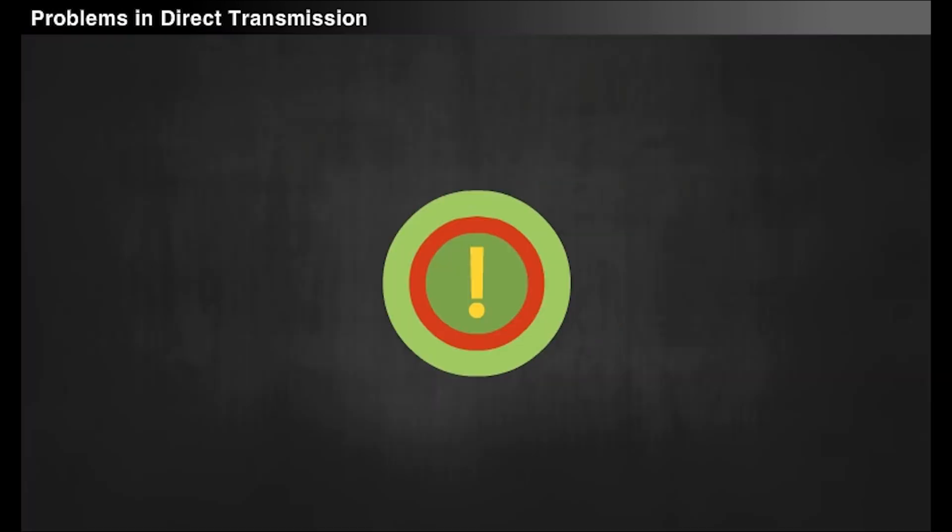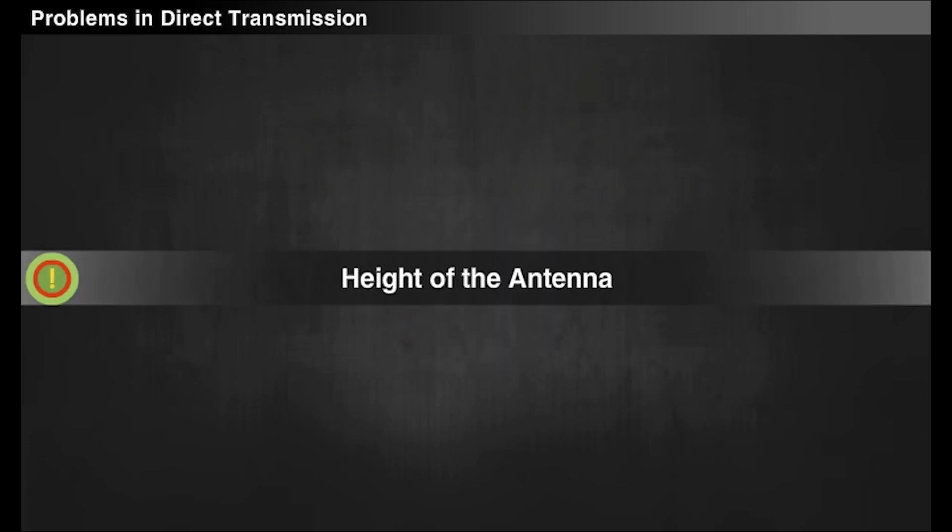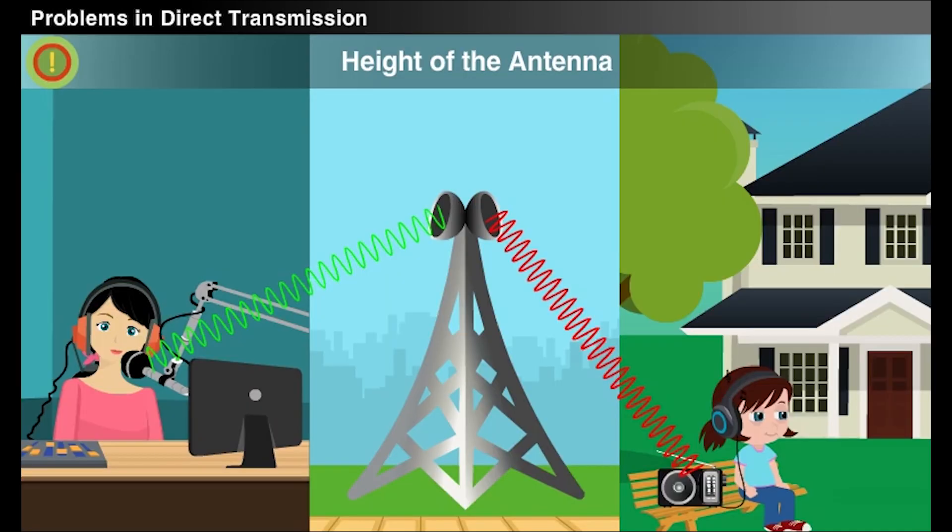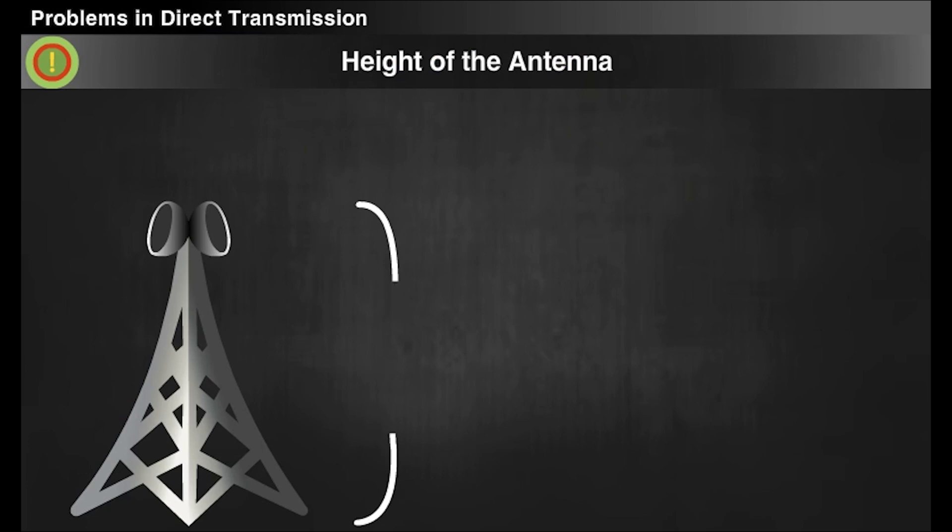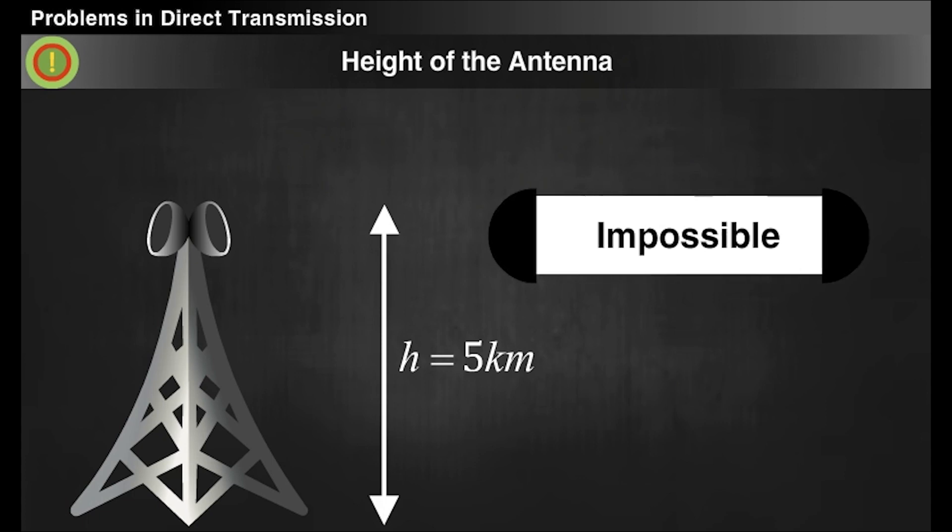The first problem is the height of the antenna. In any communication system, for transmitting a signal, we need an antenna. For efficient transmission, the height of the antenna should be at least one-fourth of the signal wavelength. If we consider sending a low frequency of 15 hertz, the wavelength is 20 kilometers. Then, one-fourth of the wavelength is 5 kilometers. Thus, we need to design an antenna with a height of 5 kilometers, which is practically impossible.